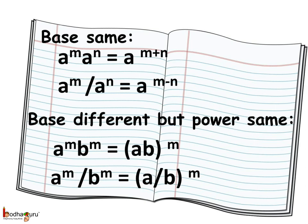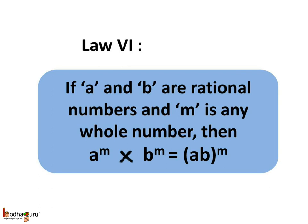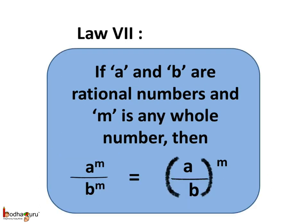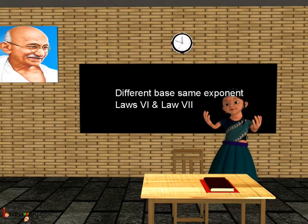And this is exactly what the sixth and seventh law of exponents say. According to the sixth law of exponents, if a and b are rational numbers and m is any whole number, then a to the power m multiplied by b to the power m is equal to ab to the power m. So that was all about exponents. Bye bye children.